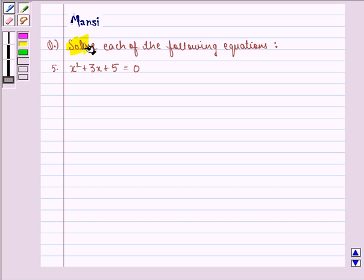In this question, we have to solve the equation x² + 3x + 5 = 0. Before starting the solution, let's see the key idea behind the question.